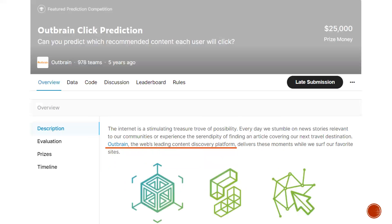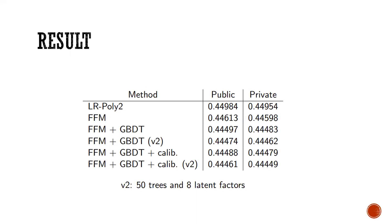Their final results show that using FFM alone already achieves strong performance on both the public and private leaderboards. Adding GBDT-generated features further improves results, and the major improvement comes from FFM itself — all remaining improvements from tree features and calibration are small incremental gains on top of FFM.